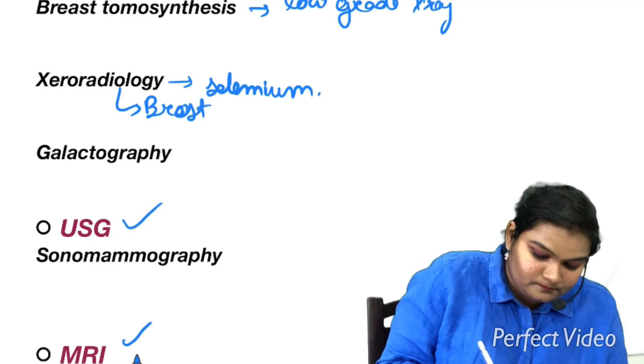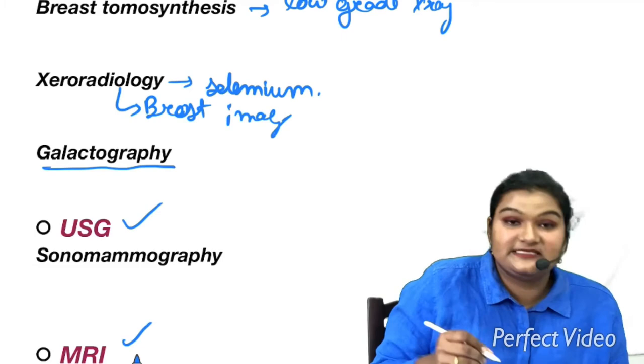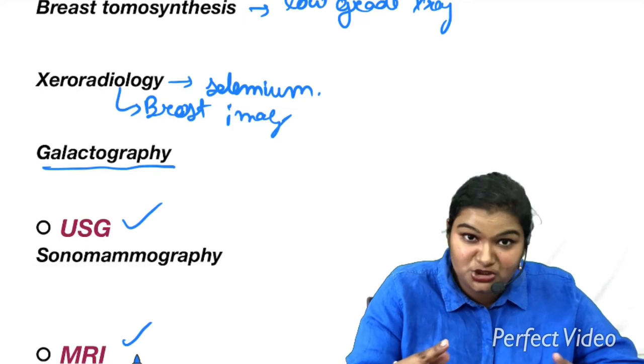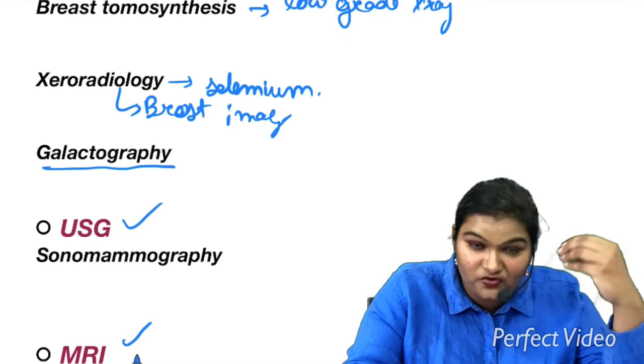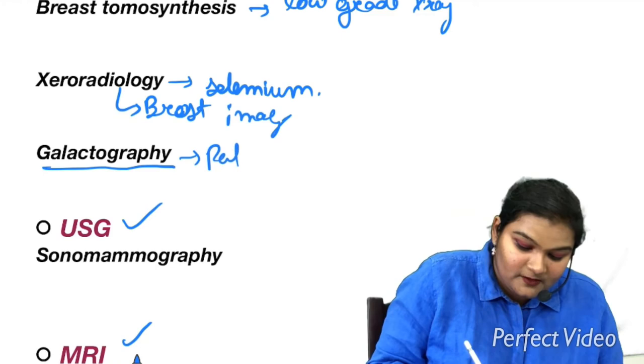Then we have galactography or you can say it as ductography. What in galactography is done? You are going to inject a dye in the milk duct system or duct system in the breast to visualize or produce the image of the milk duct system in the breast. And it is done in pathological nipple discharge.